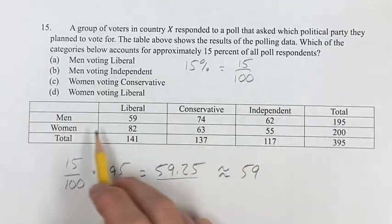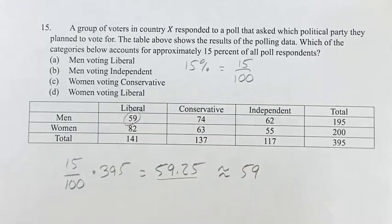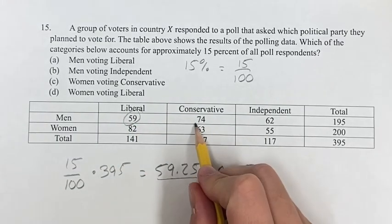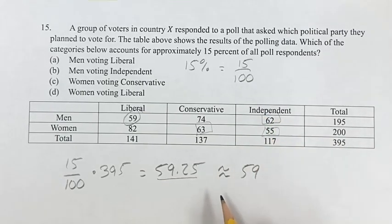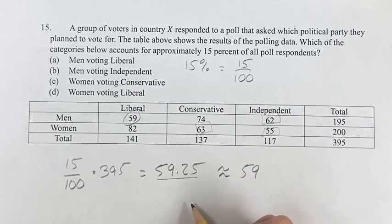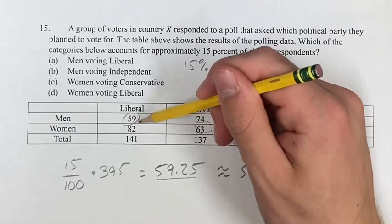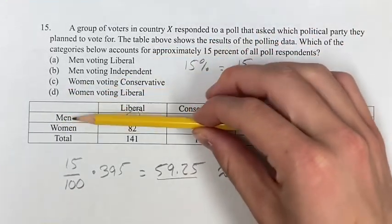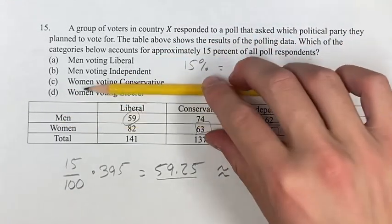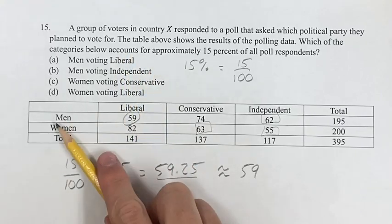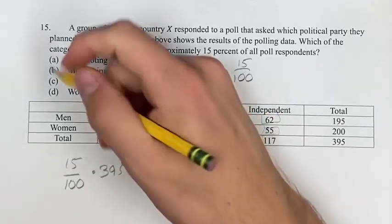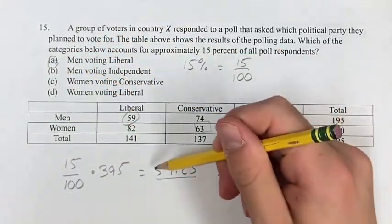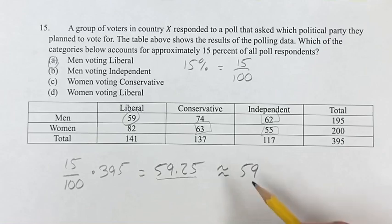If we look in the table, we notice there's a 59. We also have a 62 and a 63, which are pretty close, and 55 is pretty close. But 59 is by far the closest to 59.25. Looking at what this 59 represents, it's in the row for men and the column for liberal, so this is men who are voting liberal — and that is one of our answer choices.